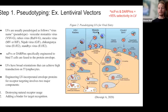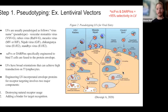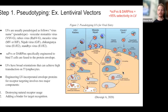The first step of this process is pseudotyping. I'm going to be covering lentiviral vectors as an example because, through the literature I read, lentiviral vectors seem to be the most promising when coupled with SCFVs and DARPINs, achieving greater than 95% selectivity.